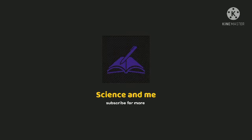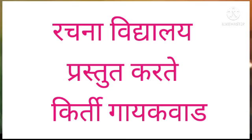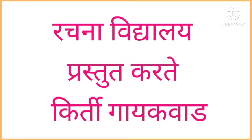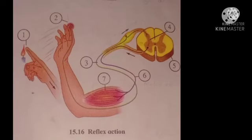Bridge Course Standard 10th Science. The Autonomic Nervous System, or ANS, consists of nerves of involuntary organs like the heart, lungs, stomach, etc.